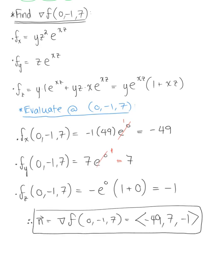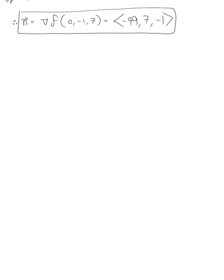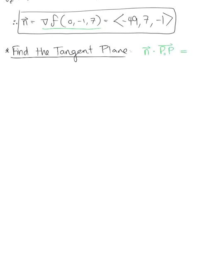We're now ready to find the equation of our tangent plane. We dot our normal vector defined by the gradient with the position vector from P-naught to P and set this equal to 0. Plugging this in, we take the dot product of the vector (minus 49, 7, minus 1) with (x minus 0, y plus 1, z minus 7).